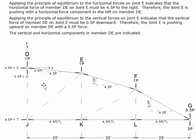Finally, at joint D we have a 0.5P upward force from each side and a 1P downward force — so the joint is in vertical equilibrium. We also have a 4.5P force from C and a 4.5P horizontal component from the adjacent member, so the horizontal forces sum to zero. Joint D is in equilibrium, and we've gone all the way around the loop finding full consistency — achieved without any force in the web members.